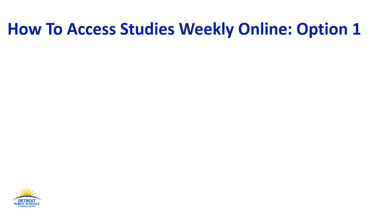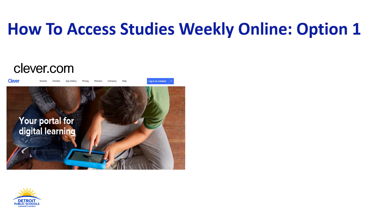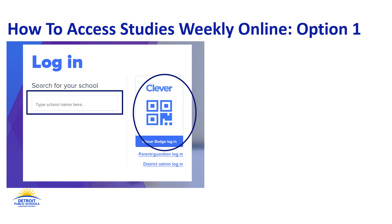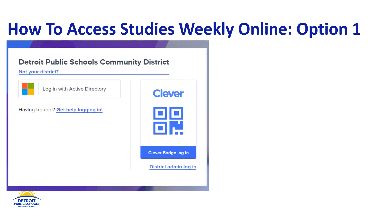One way to access Studies Weekly is by going through Clever.com, then clicking 'Log in as a student.' You can either use your QR code or search for your school to continue logging in. Once you've selected your school, click 'Log in with Active Directory' to enter your username and password for Clever. Once you've gained access to Clever, scroll all the way down until you find the Studies Weekly tile, then select it and be sure to choose social studies.